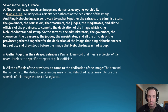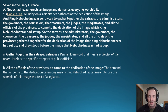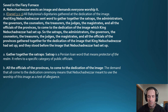All the officials of the provinces gathered together for the dedication of the image and stood before it. A satrap is a Persian loan word meaning protector of the realm, referring to a specific category of public officials. The demand that all attend this ceremony meant that Nebuchadnezzar intended to use the worship of this image as a test of allegiance.